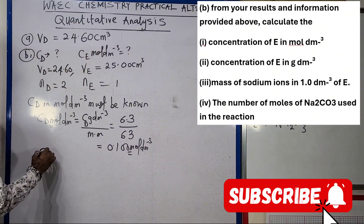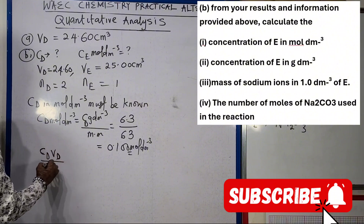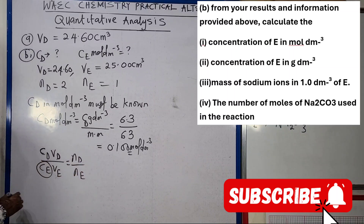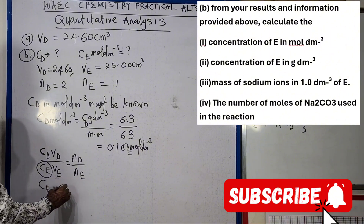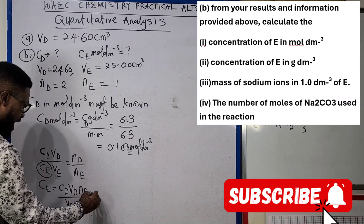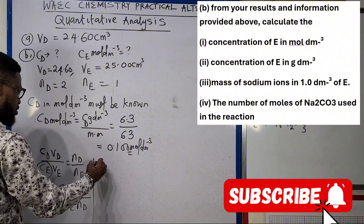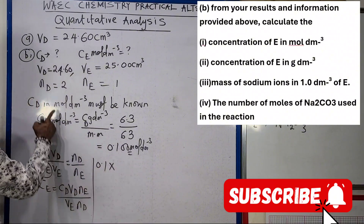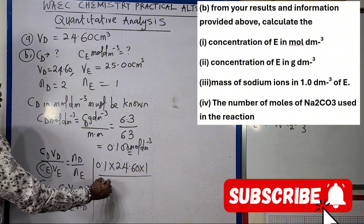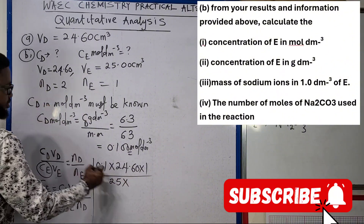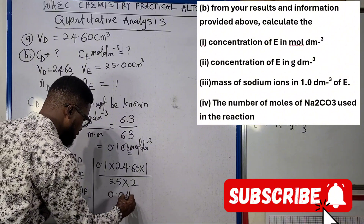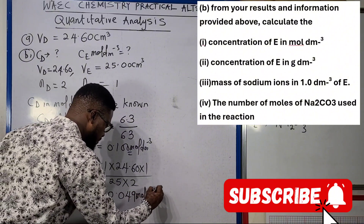Now that I know CD, I can use the formula: CD × VD divided by CE × VE = nD over nE. Making CE the subject: CE = (CD × VD × nE) divided by (VE × nD). Substituting: CE = (0.1 × 24.60 × 1) divided by (25 × 2).